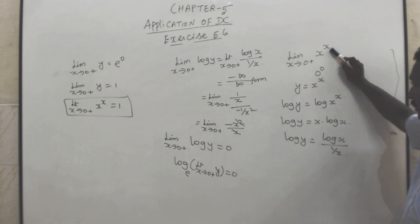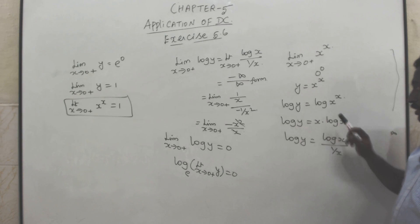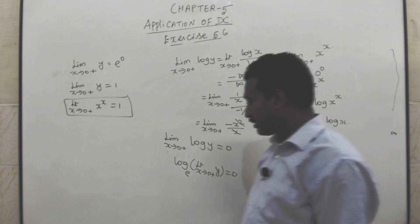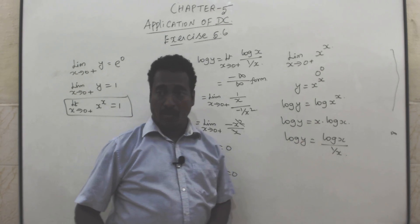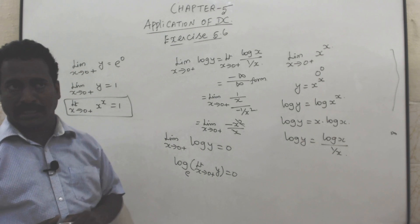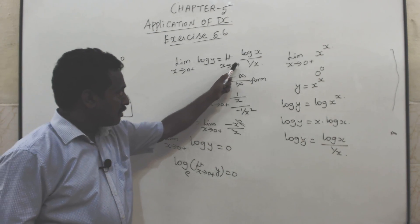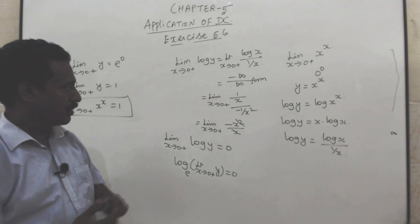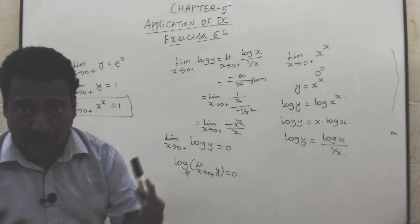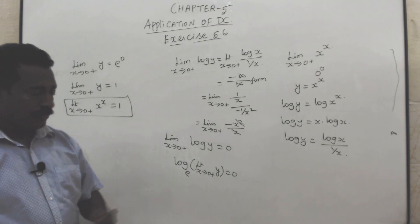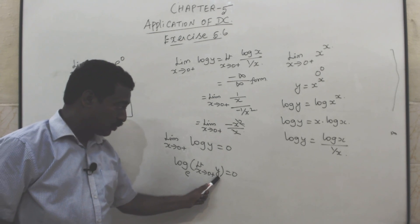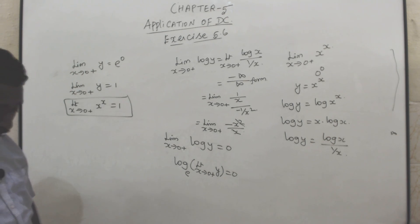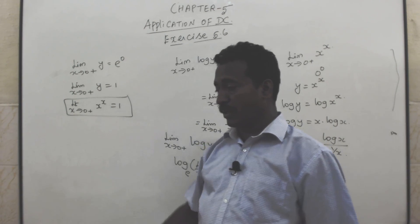Recap: x power x — 0 power 0 form. Take log on both sides: log y = log(x^x) = x·log x. Rewrite as log y = log x / (1/x). Taking limit: differentiation gives 1/x divided by −1/x² = −x → 0. So log of limit y = 0, limit y = e^0 = 1, and limit x tends to 0 plus of x^x = 1.